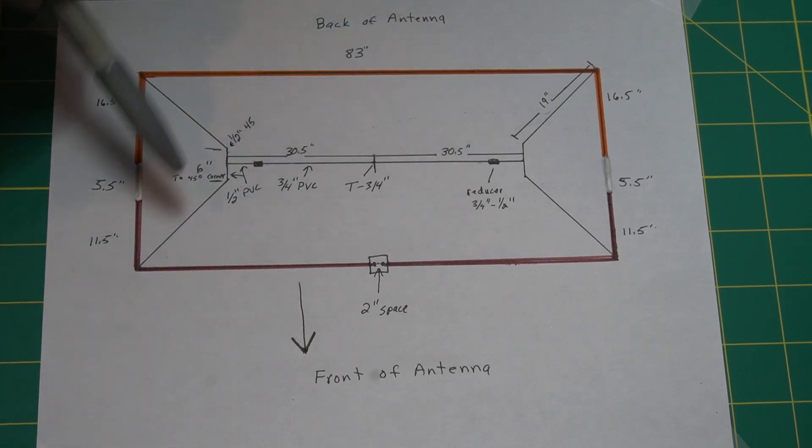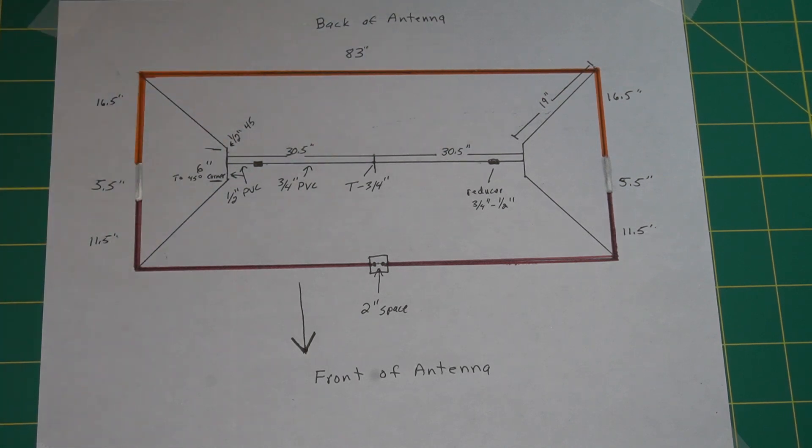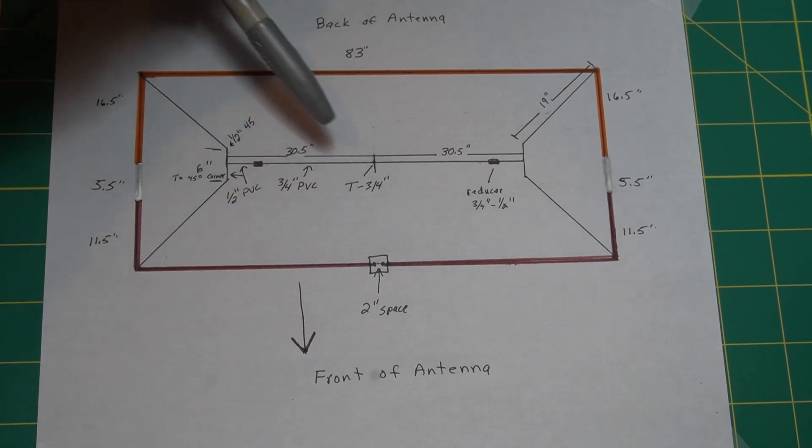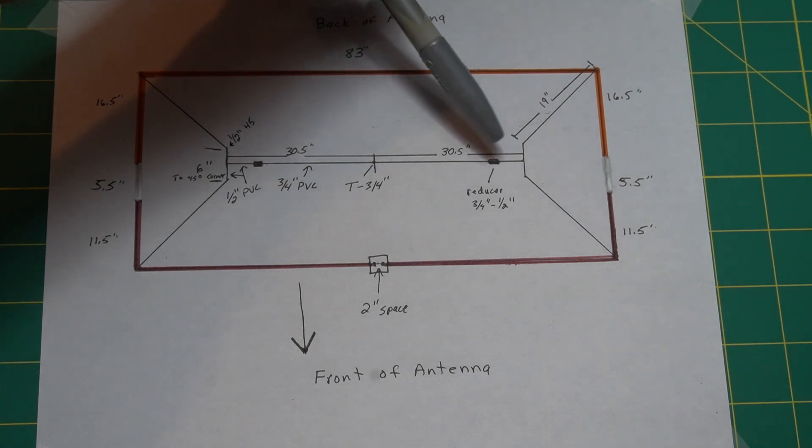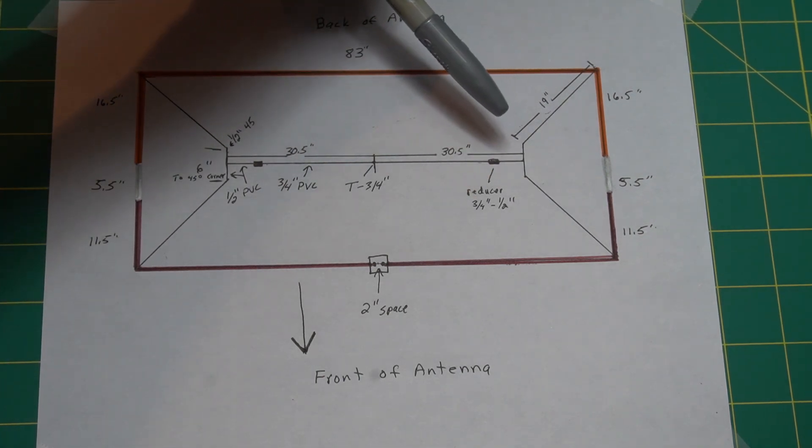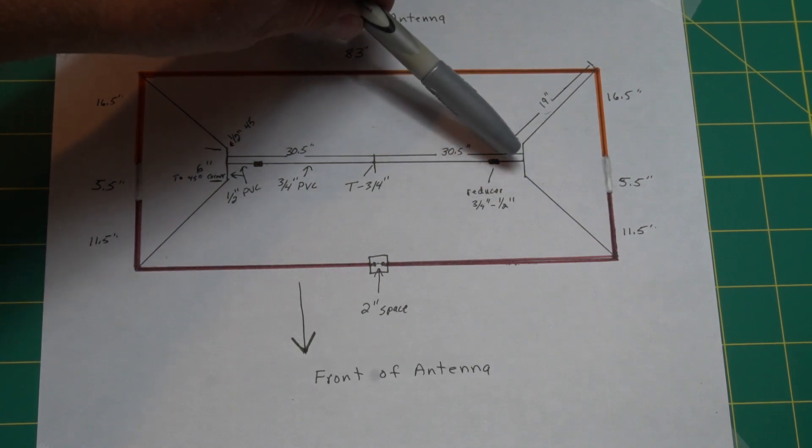And this is the PVC frame inside here. I got all the measurements there. There's a T here. That's where it comes up from. It's three-quarter inch from here to here, reducers on each end to reduce to half inch. That's just to make it lighter. You don't have to do that. Then you have a 45 on each side here.